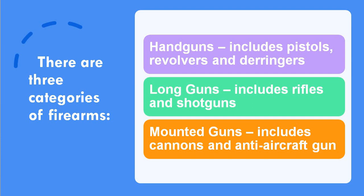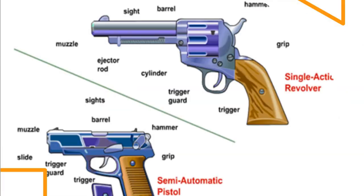Now that we have discussed the different categories of firearms, let's move on to the different parts of a handgun. The picture shown here is of a single action revolver and a single automatic pistol. You can see there is a muzzle end, an ejector rod, a barrel — the long cylindrical part — a cylinder, a trigger guard, a trigger, and a hammer. These are the parts of a single action revolver.